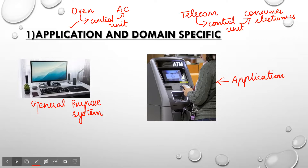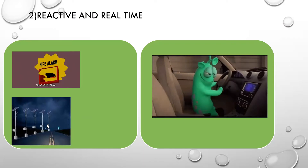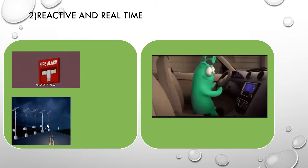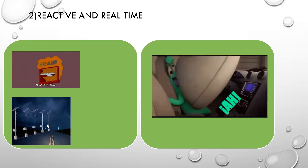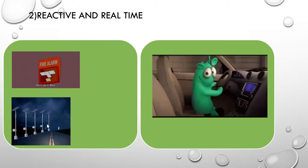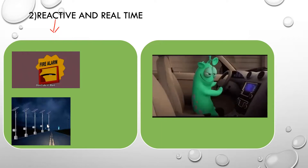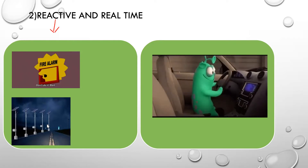Now let us move on to the next characteristic. The second characteristic is reactive and real-time. Embedded system is a real-time system because it works with real-time inputs. We are talking about reactive now. Consider your fire alarm — if there is fire, your fire alarm will start sounding and in some cases it will also splash water. The occurrence of fire is the input.